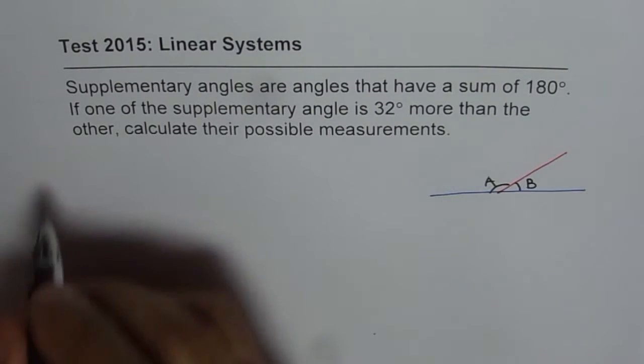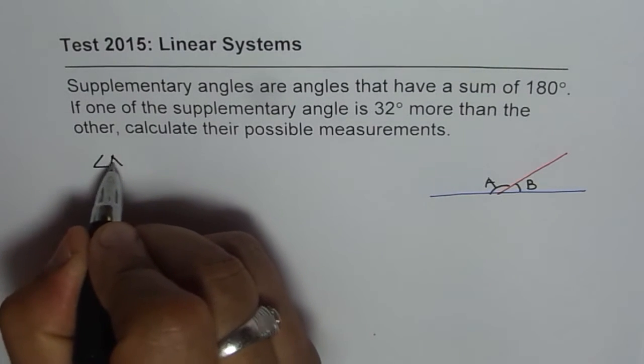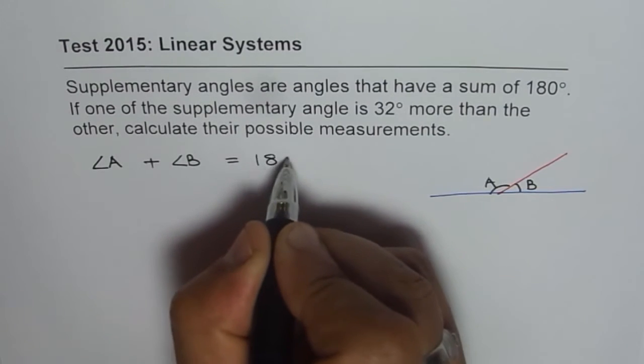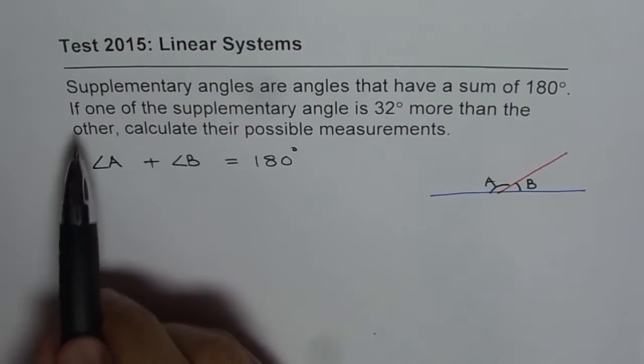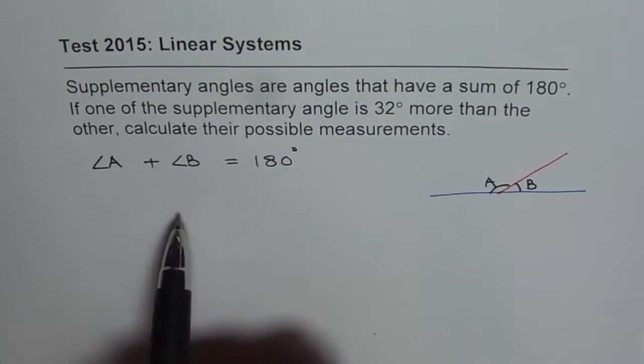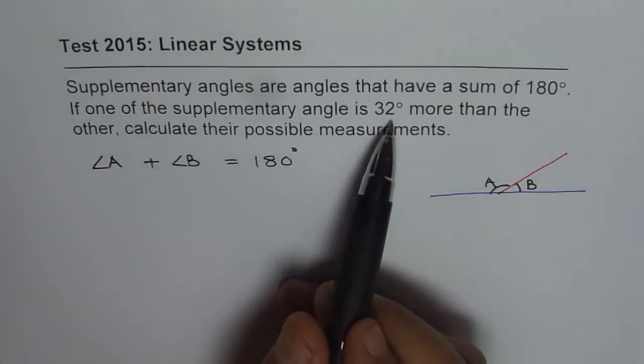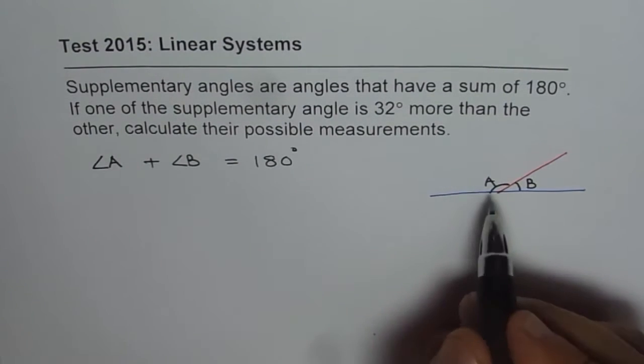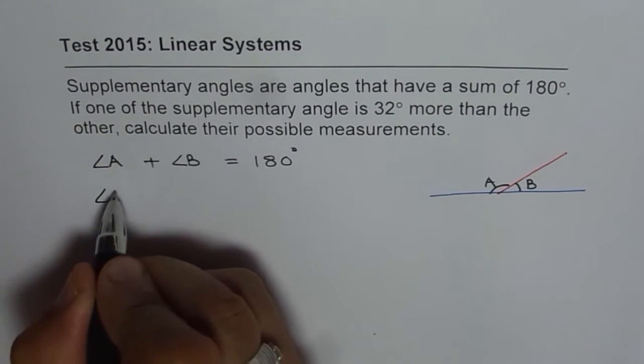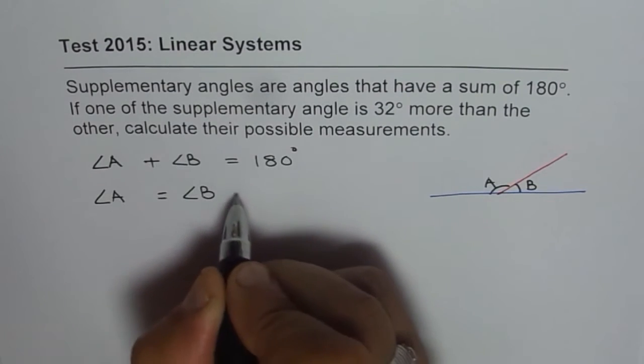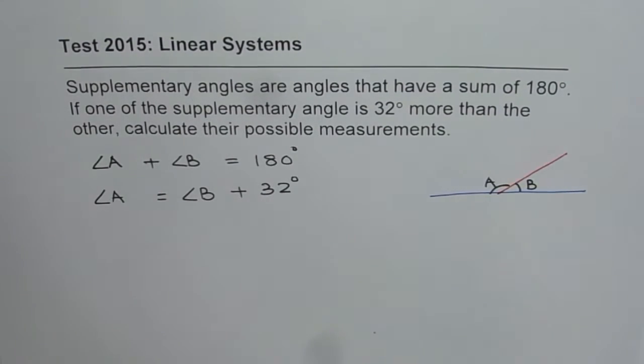So what we are given here is that sum of these two angles, that means angle A plus angle B is equal to 180 degrees. Now it says if one of the supplementary angles is 32, that means the measurement of one angle is 32 degrees more than the other. So we have drawn A as a bigger one. So we can say angle A is equal to angle B plus 32 degrees. So that makes the second equation.